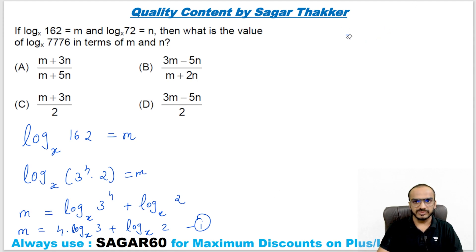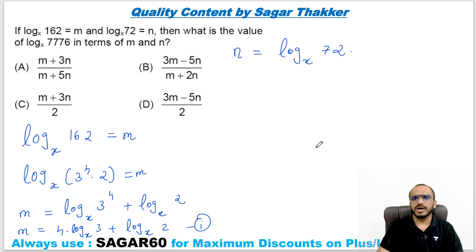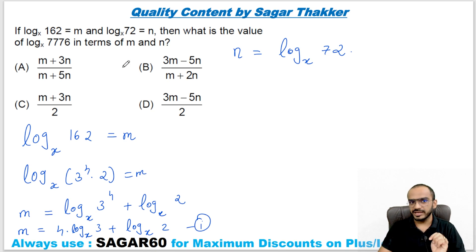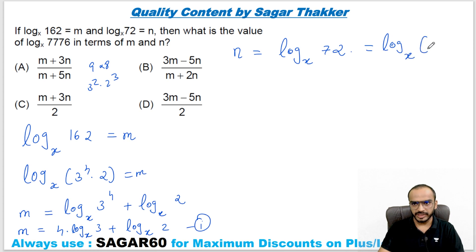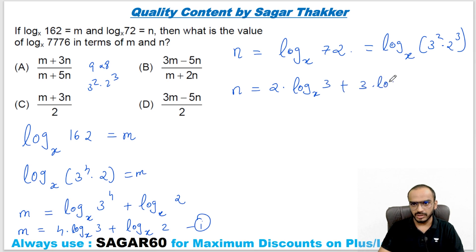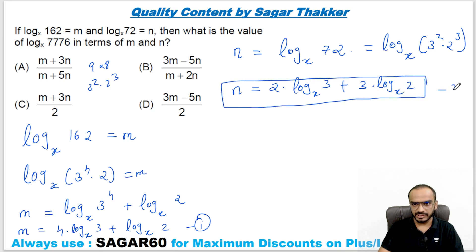Now for n: n equals log_x(72). We break 72 as 3 squared times 2 cubed. So n equals 2·log_x(3) plus 3·log_x(2). Now we have the value of m and the value of n.